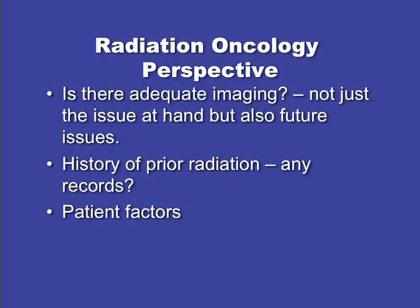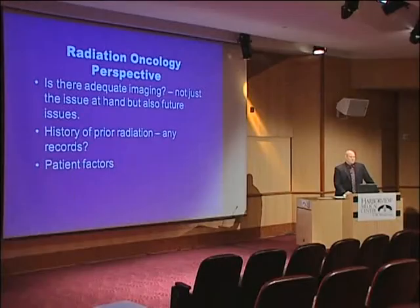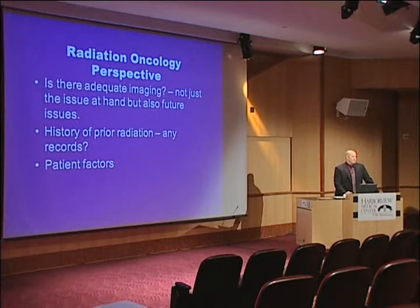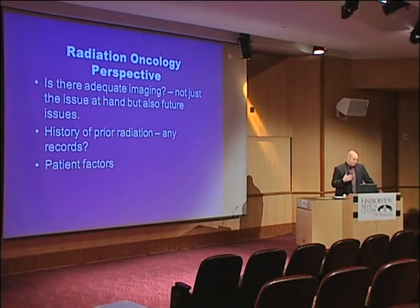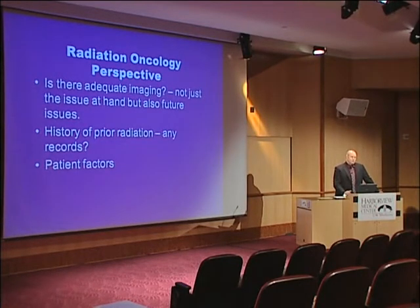History of prior radiation — to most people that means they got 300 times 10 or breast tangents. From a radiation oncology perspective, that means imaging: we want to know where those beams came in and what doses to what critical structures were delivered. We're going to give much better input in terms of what we can do by actually knowing those details.